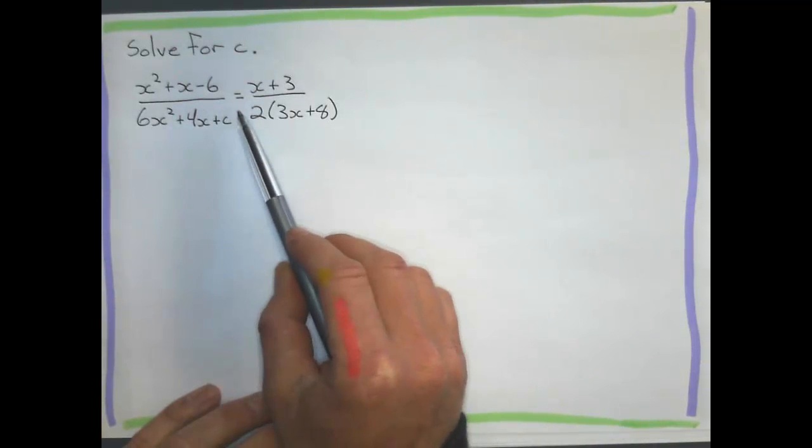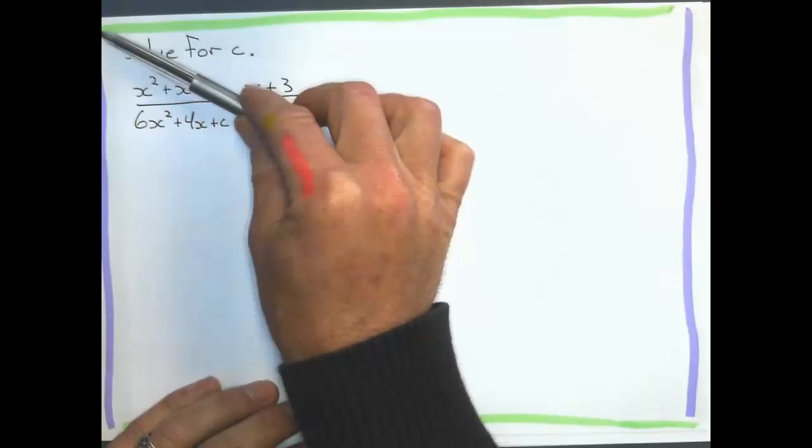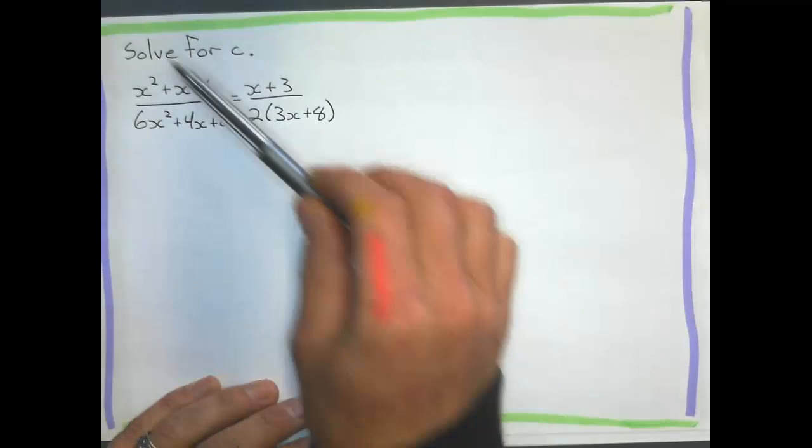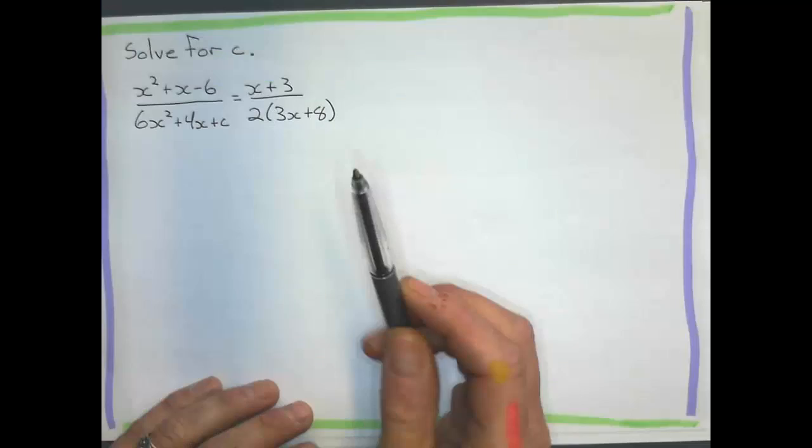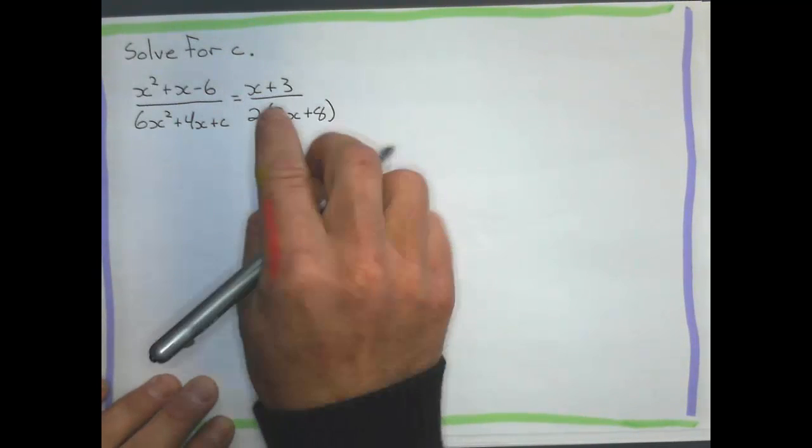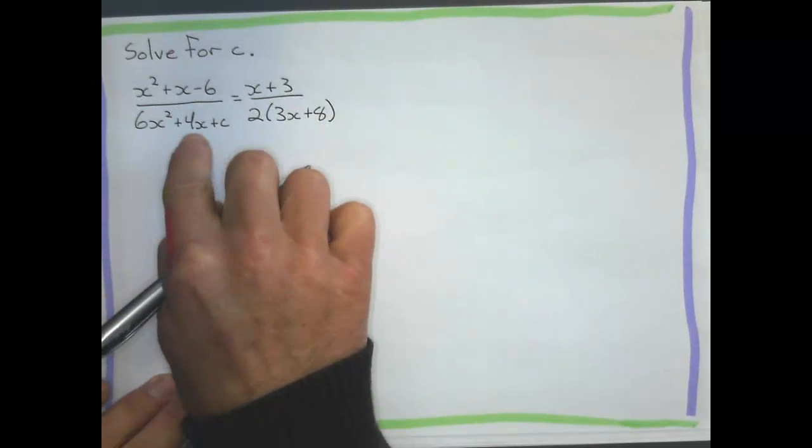but I've got a proportion, which is two equal fractions. And if I want to get rid of those fractions, the cross products are equal. So I cross multiply and set those expressions equal to each other. So what I mean is this times this equals this times this.